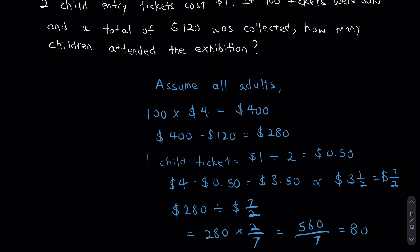Just like any normal chicken and rabbit question. So what's the only difference we observe here? We are doing a chicken and rabbit question involving fractions. But if you look closely at the steps, nothing actually changed. So now we know how to do a chicken and rabbit question even when our numbers are not so clean.